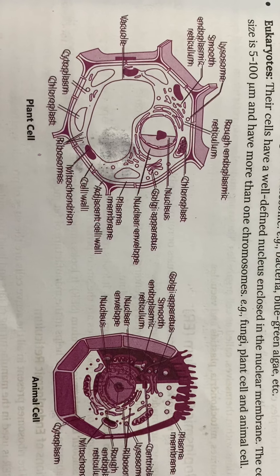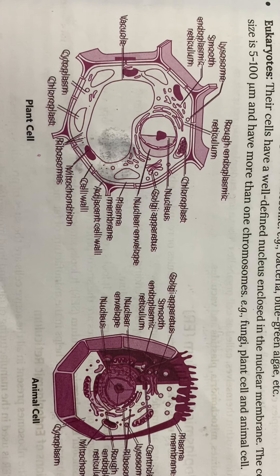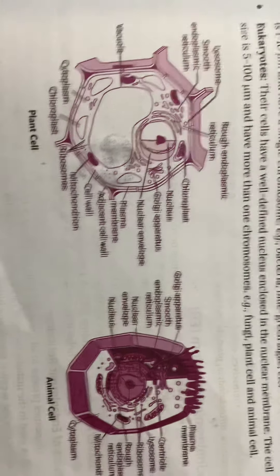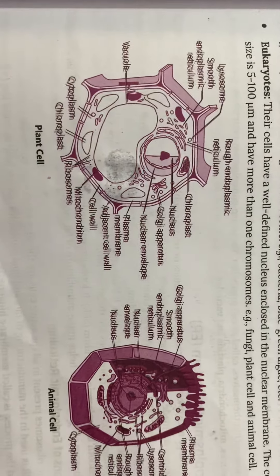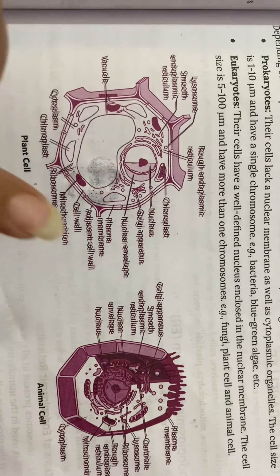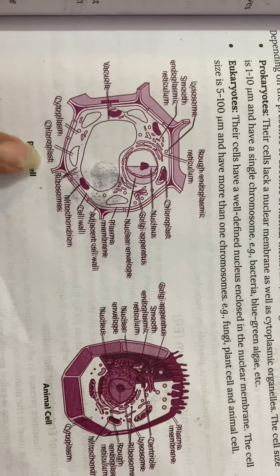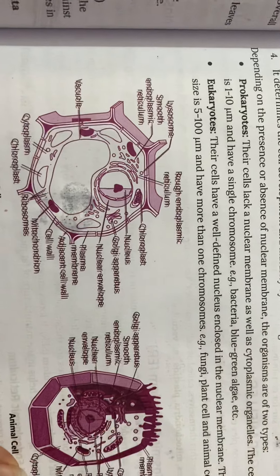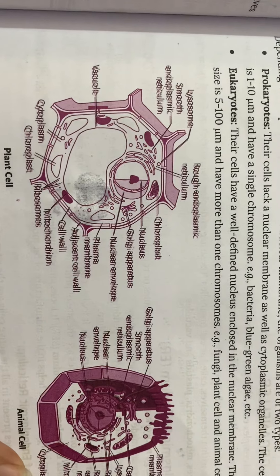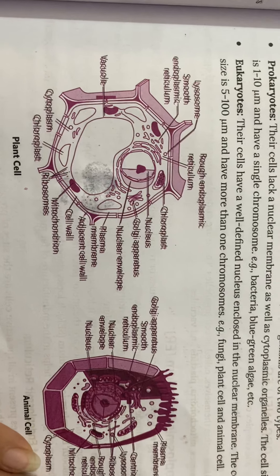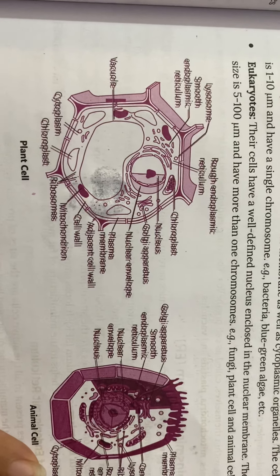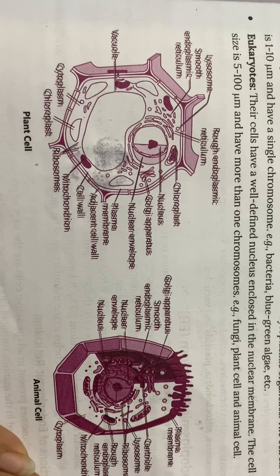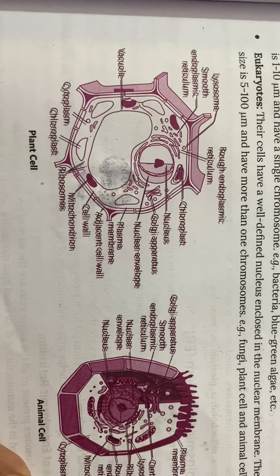The basic difference between the plant cell and the animal cell is that the plant cell has a cell wall, whereas the animal cell does not have a cell wall. The second difference is that plastids are present in the plant cell, but in the animal cell no plastids are present.